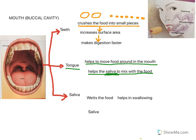Saliva has two functions. First, it wets the food. This wetting is important because it helps in swallowing — food needs to be wet to travel down the alimentary canal. The lining of the alimentary canal is very soft, so food must be wet. Dry food has more friction and is difficult to swallow.